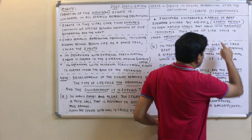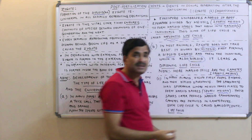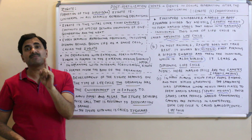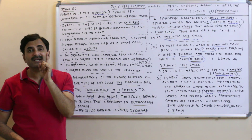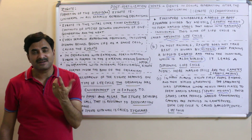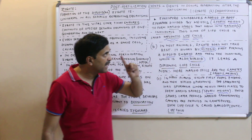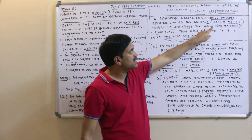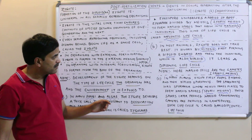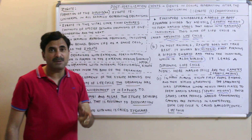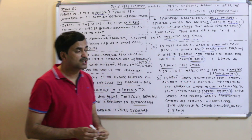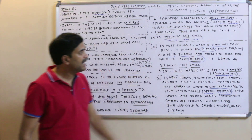In the diplontic life cycle, gametic meiosis occurs because gametes are always haploid. A diploid organism forms haploid gametes by meiosis — hence gametic meiosis. So to summarize: in the haplontic life cycle the meiosis type is zygotic meiosis, and in the diplontic life cycle the meiosis type is gametic meiosis. There is also a third important type: sporic meiosis.